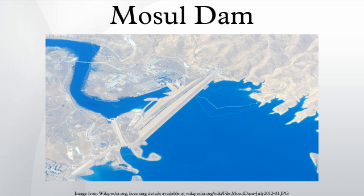The earthen embankment dam is located on top of gypsum, a soft mineral which dissolves in contact with water. Continuous maintenance is required to plug, or grout, new leaks with a liquefied slurry of cement and other additives. More than 50,000 tons of material have been injected into the dam since leaks began forming shortly after the reservoir was filled in 1986, and 24 machines currently continuously pump grout into the dam base. A September 2006 report by the United States Army Corps of Engineers noted that, in terms of internal erosion potential of the foundation, Mosul Dam is the most dangerous dam in the world.